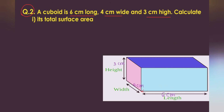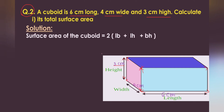So this is 6 cm long. The width is 4 cm, and the height is 3 cm. Here is the formula — the surface area of the cuboid is 2 times (LB + LH + BH).